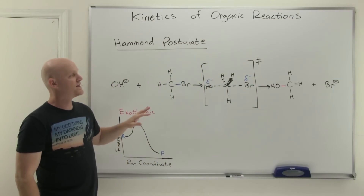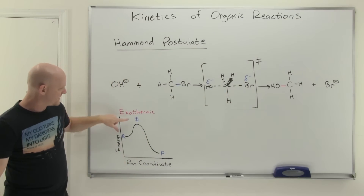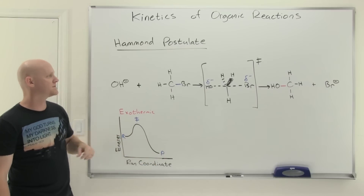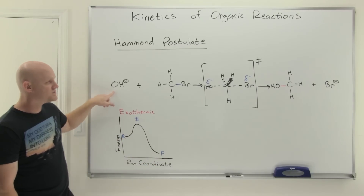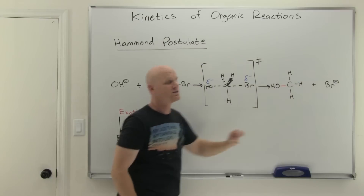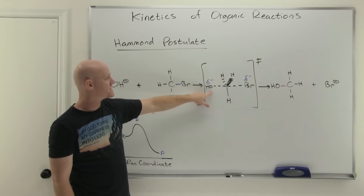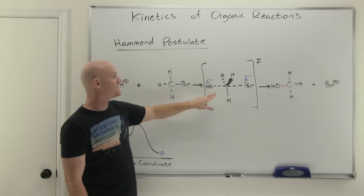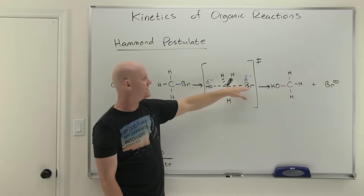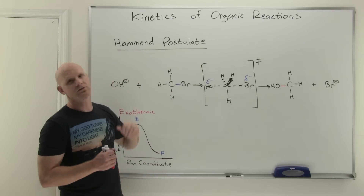What we can learn from the Hammond postulate is which atom has more of the partial negative charge in that transition state. Because this step is exothermic, the transition state is going to resemble the reactant more than the product. Since it's the reactant that has the negative charge on the oxygen and the product that has the negative charge on the bromine, this transition state looks more like the reactant. So it's not 50-50 — it's going to be more than half on the oxygen and less than half the negative charge on the bromine. The oxygen is more partially negative than the bromine, according to the Hammond postulate.